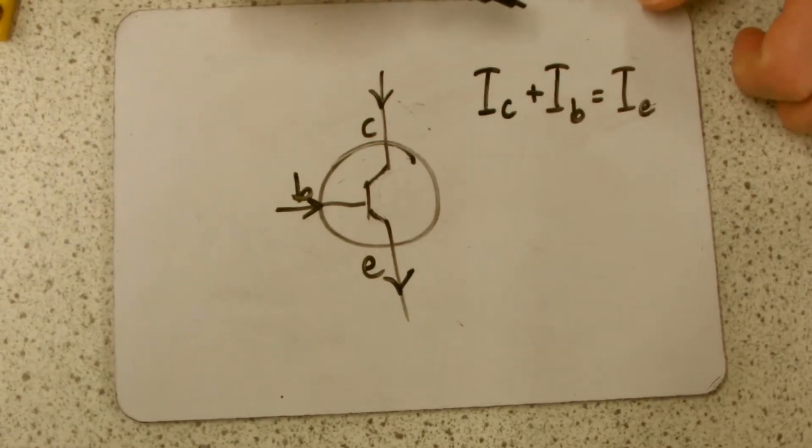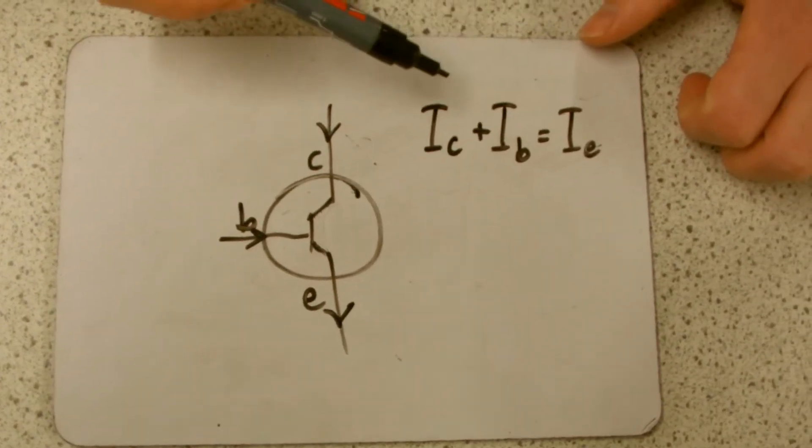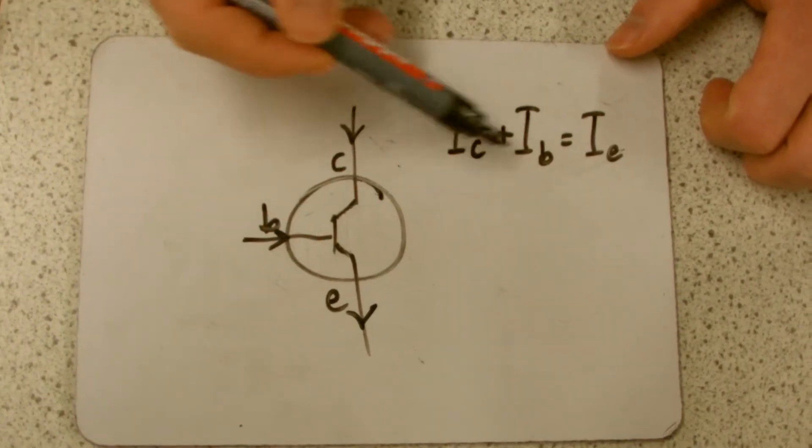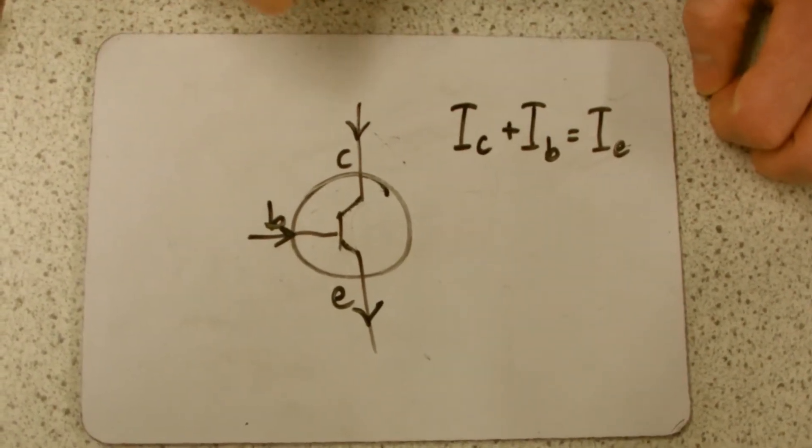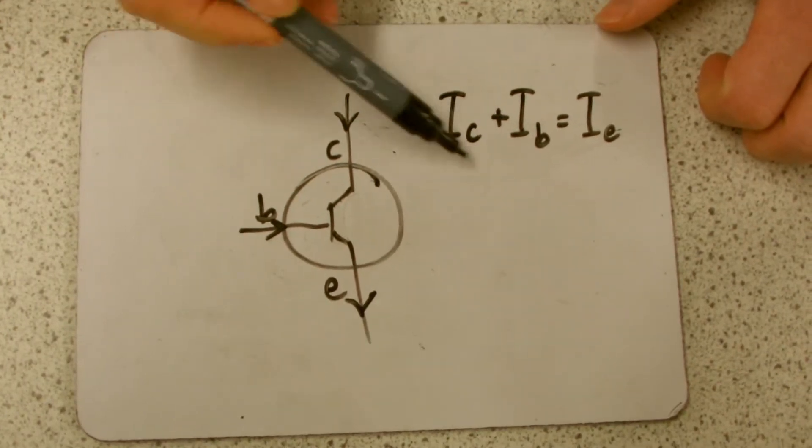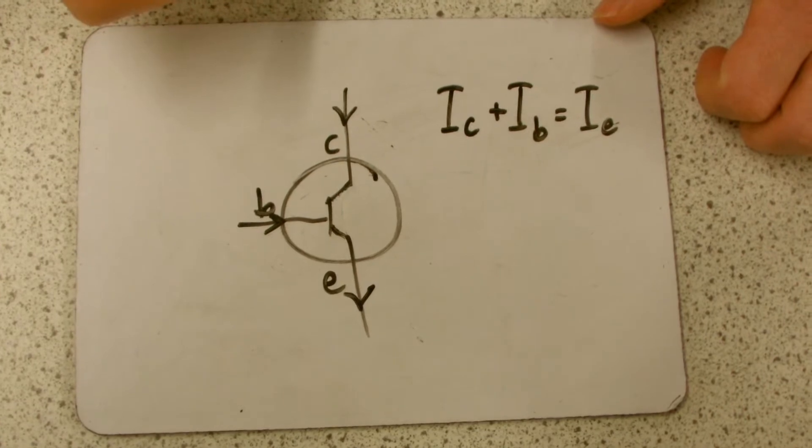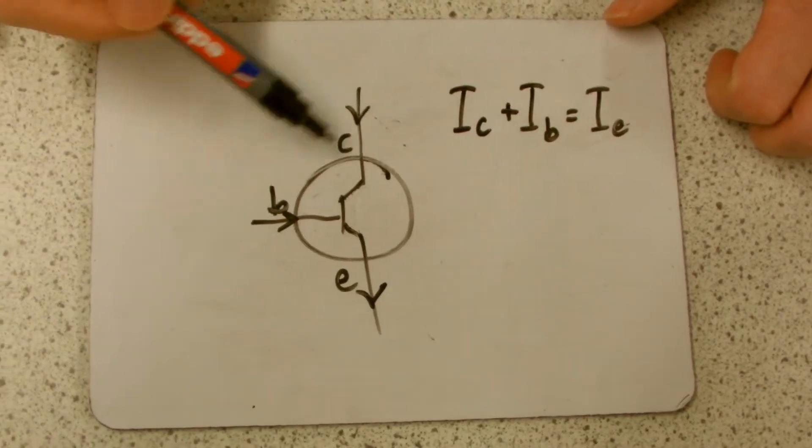So this is actually Kirchhoff's first law. It's just a little bit of notation that you need to know that the current coming in at C has to add up with the current coming in at B to be the current coming out at E. That's Kirchhoff's first law - all the currents into a point equal all the currents out of the point, and the transistor is the base of all computing.